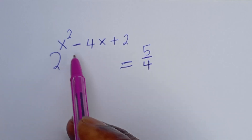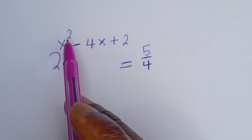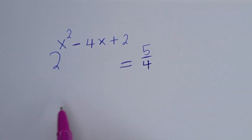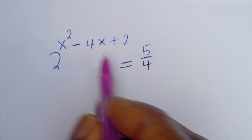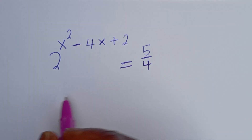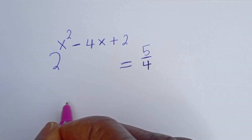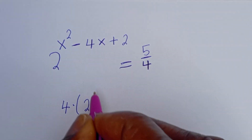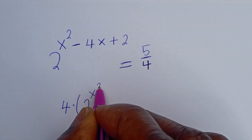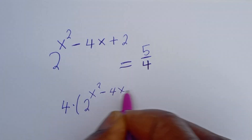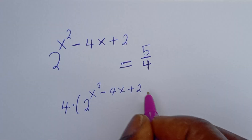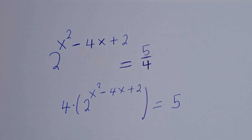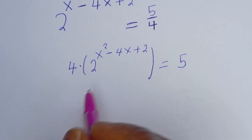Hello. How to solve for s in this equation: 2 to the power of s squared minus 4s plus 2 is equal to 5 divided by 4. Let's cross multiply — we have 4 multiplied by 2 to the power of s squared minus 4s plus 2 is equal to 5.